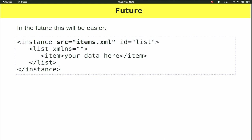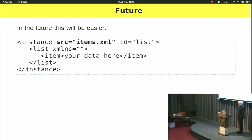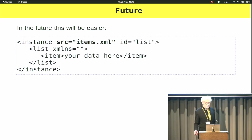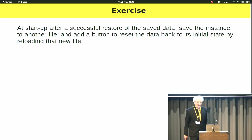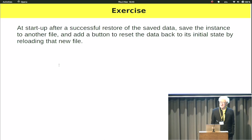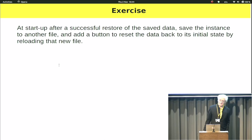Actually, in the future this will be easier — this is one of the changes coming in the next version of XForms. If you try to initialize an instance with src and that fails, it will use the content of the instance instead. So you won't have to do this workaround in the future — you can just say 'this is where I'd like to get the data from, and if that fails, here's some default data.' The exercise is: after a successful restore of the data, save the data to another file and add a button to reset the data back to its initial state by reloading that new file.